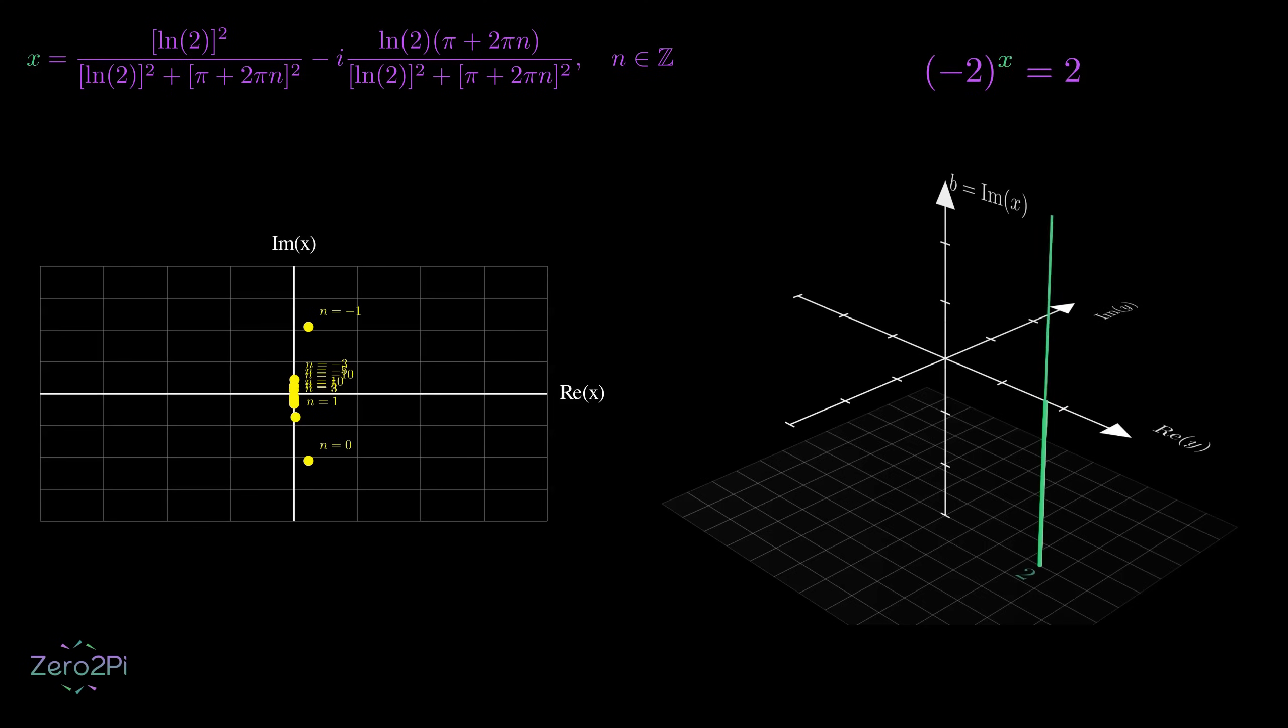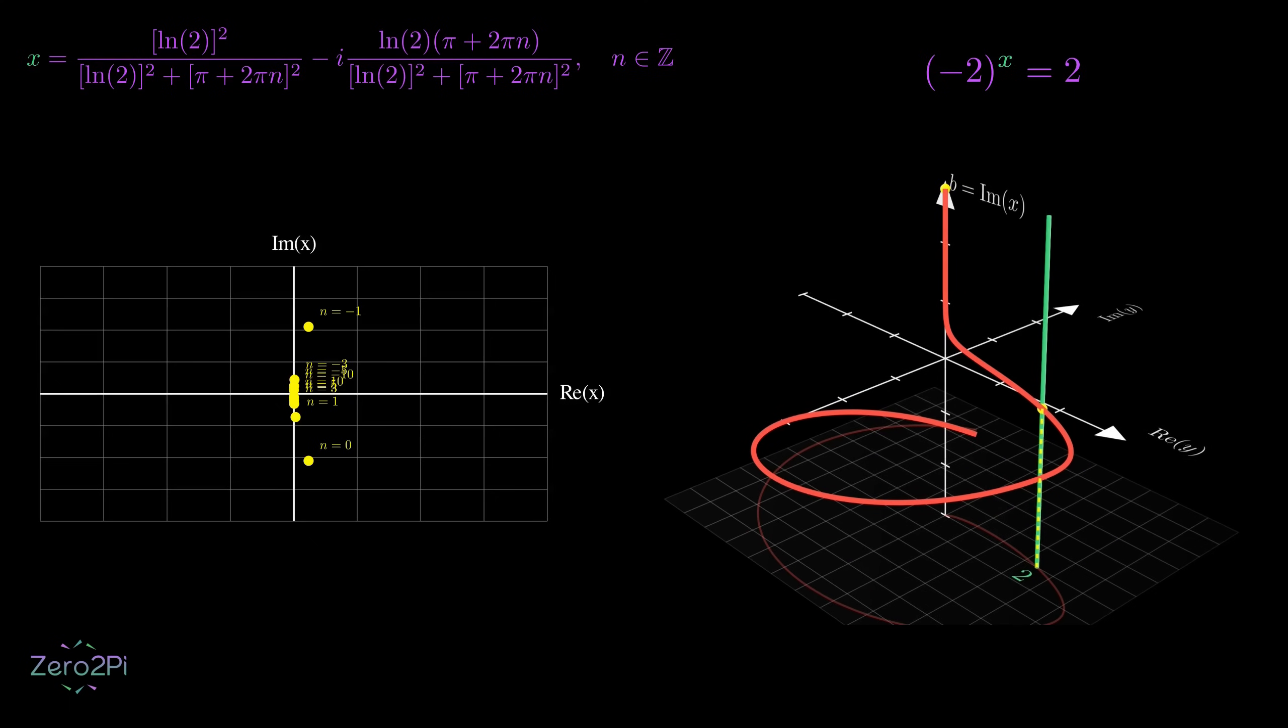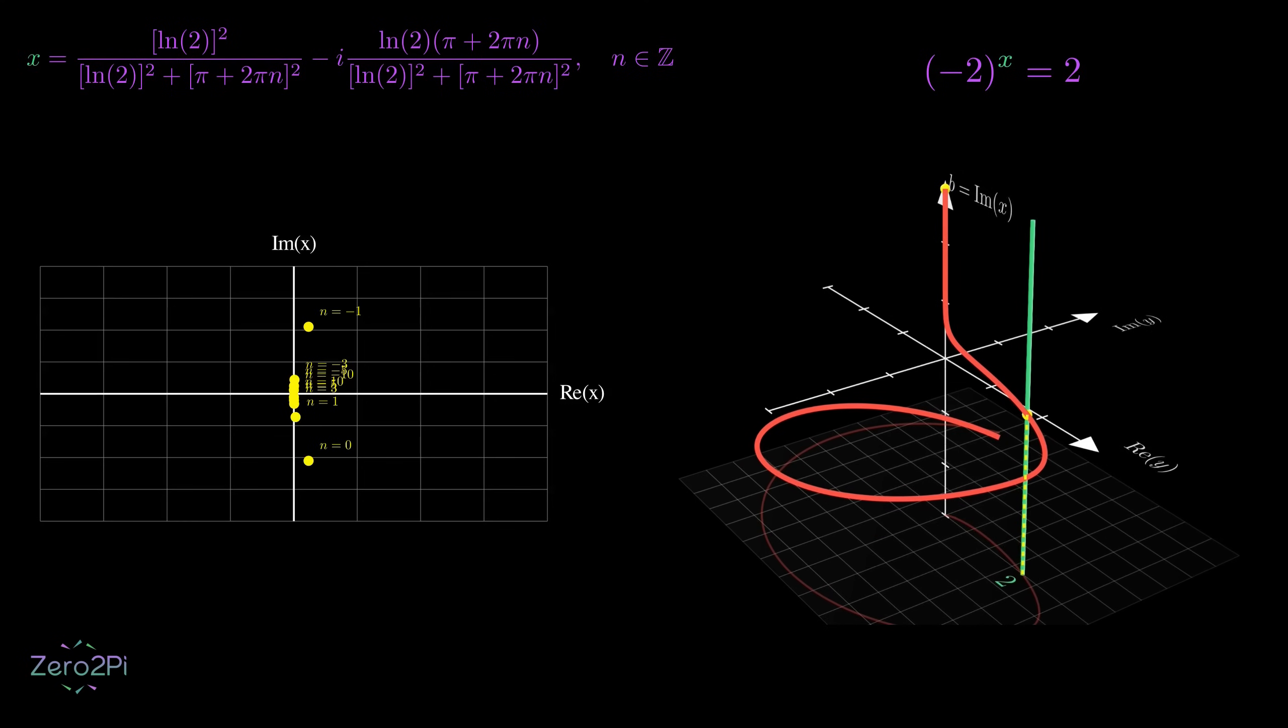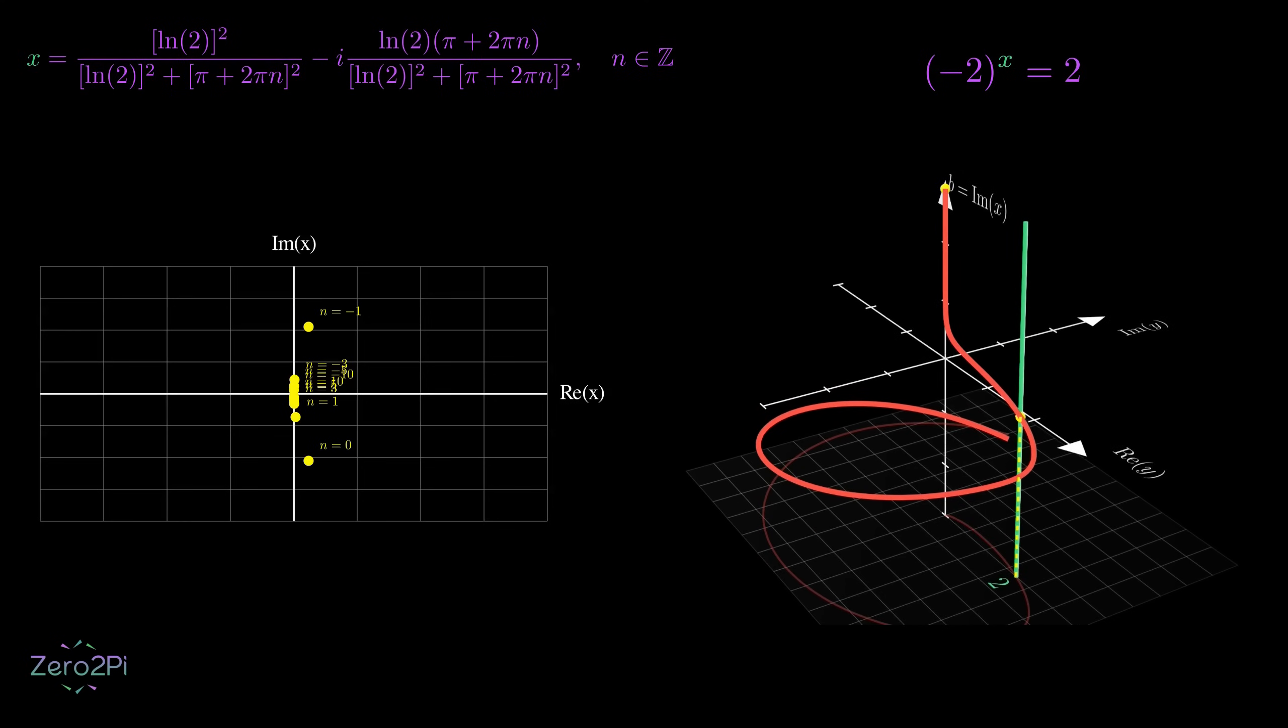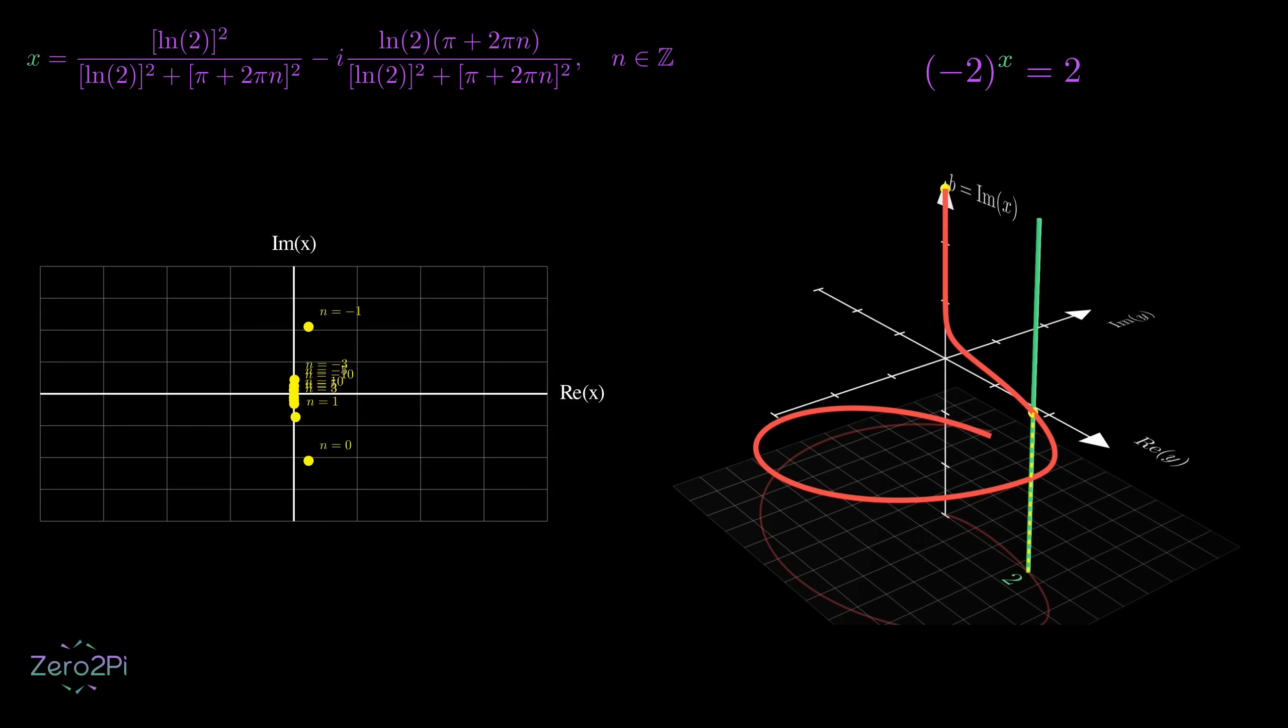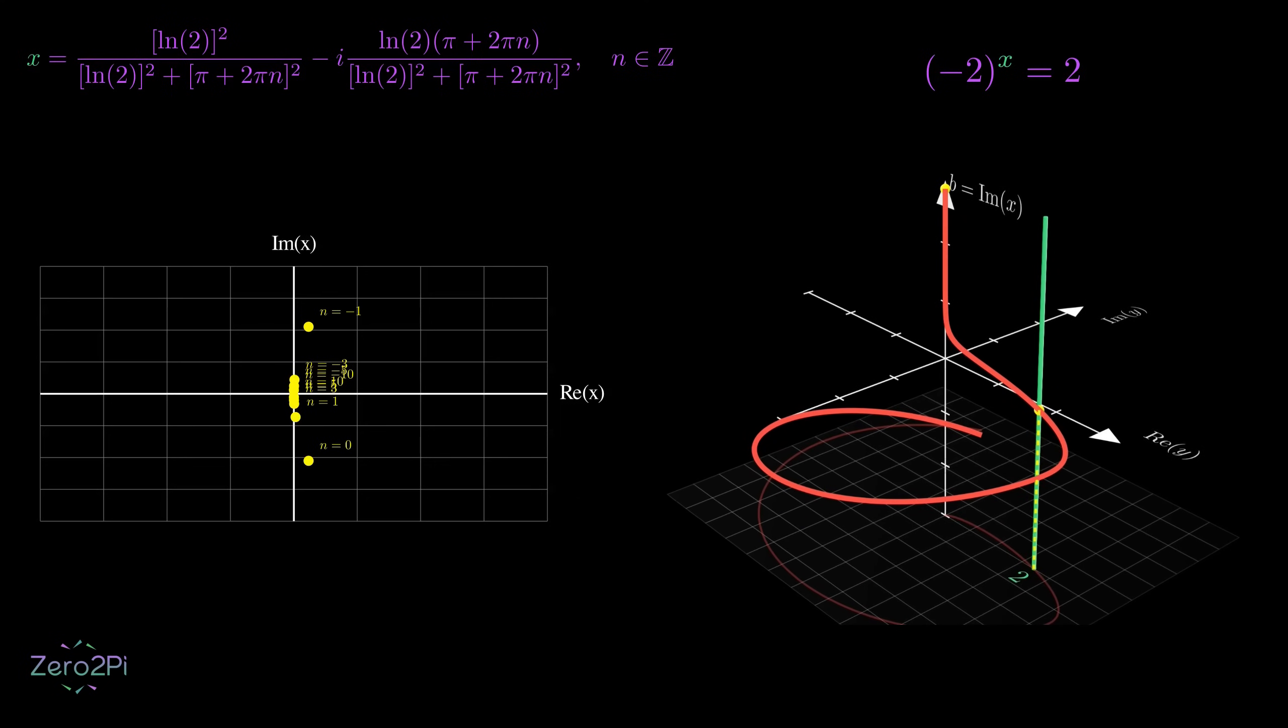On the right-hand side, we have a three-dimensional view. It's not exactly the corresponding output for this input, but it shows how the visualization of this equation looks. The red spiral shows the path traced by negative 2 to the power of complex number x. The vertical green line marks where the output equals 2 on the real axis.